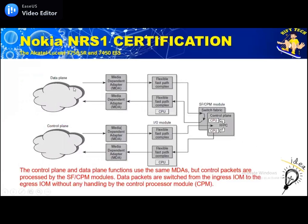When data comes from MDA to IOM, it travels through the backplane to the Input Output Module. Data goes through the switch fabric and does not go inside the Control Plane CPU. It goes from the switch fabric, returns back, and goes out to the customer. The control plane also goes through the same MDA and IOM, but from the IOM it is sent to the CPM CPU and then returns back. The data plane goes through SF and the control plane goes to the CPM CPU.